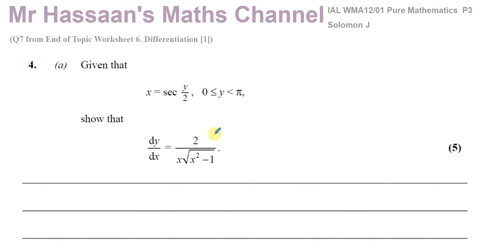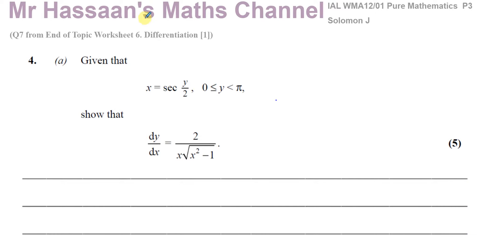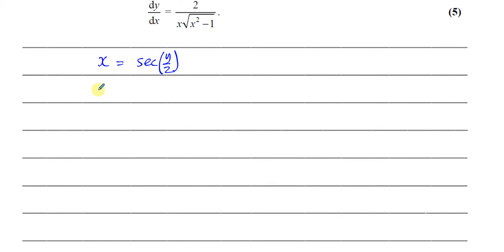To find dy/dx, what you'd normally do is rearrange the formula to make y the subject. But in this case, making y the subject is not really helpful because you'd end up with some sort of arc secant in the answer, which is very difficult to differentiate. So instead of finding dy/dx directly, we're going to find dx/dy and then rearrange it to find dy/dx. If x equals secant of y over 2, we need to find dx/dy first.